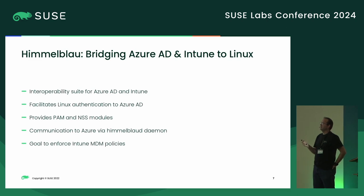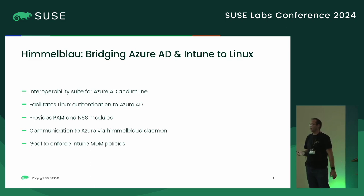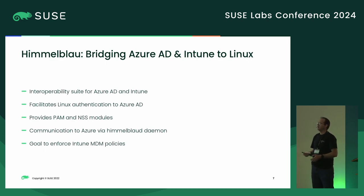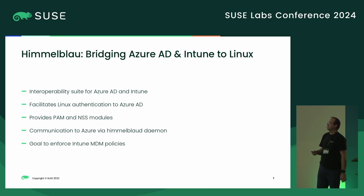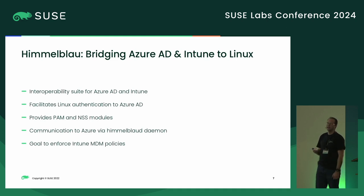Himmelblau is meant to be an interoperability suite for Azure and Intune. Intune is their policy enforcement — their mobile device enforcement — and Azure AD is their authentication. It lets us authenticate on Linux for Azure AD, providing PAM and NSS modules that talk to a daemon in the background. The goal is to enforce those Intune MDM policies, but that's not implemented yet, and I'll explain why later.